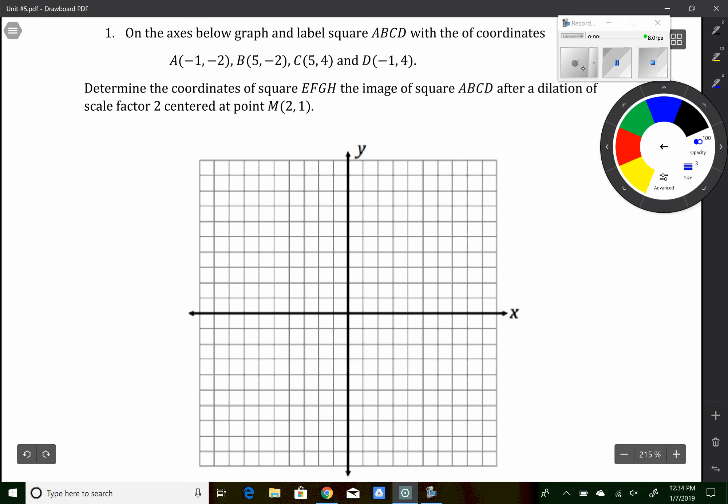So it asks us to label a square. First thing we want to do is plot the points. So there's that first point, B(5, -2) here, 5, 4 is up here. So we can start to see the square come to play. And negative 1, 4 is here.